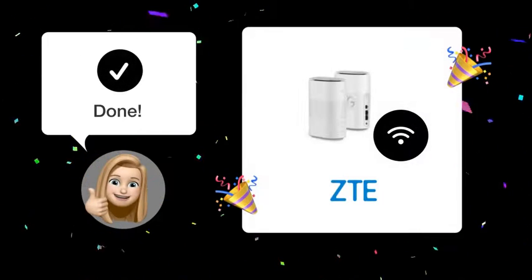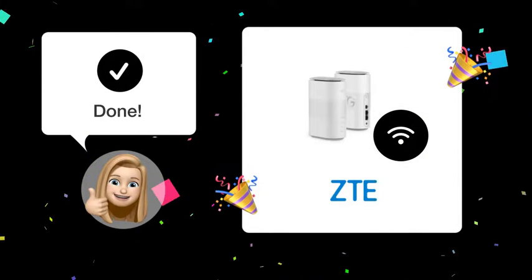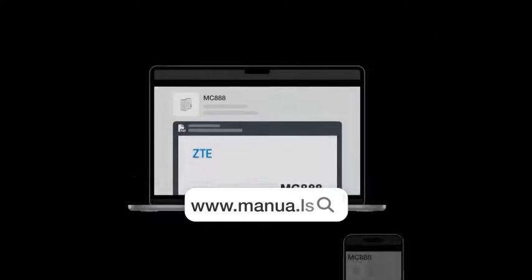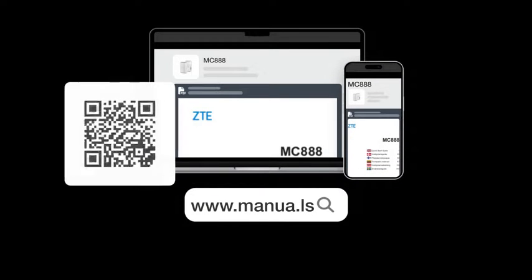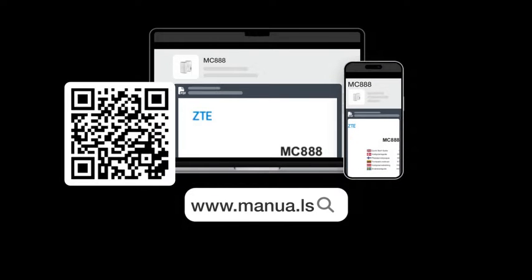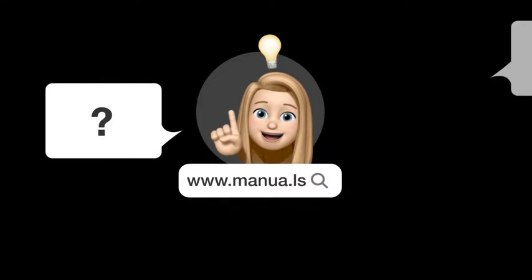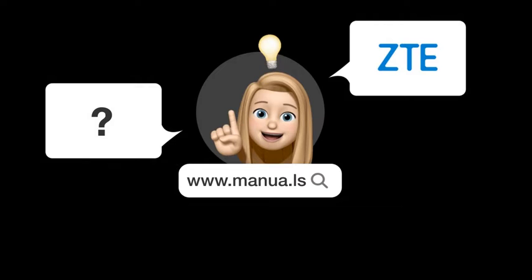You should now be able to switch your ZTEMC-888 router's frequency from 5GHz to 2.4GHz with ease. Still need help? Visit our website for the complete manual. There you will also find questions and answers from other ZTE users.